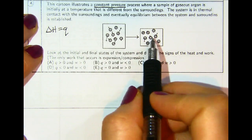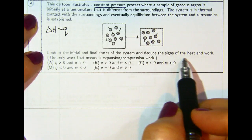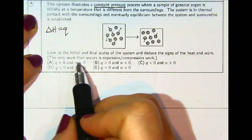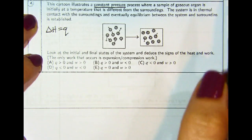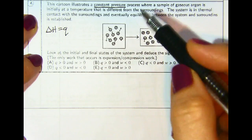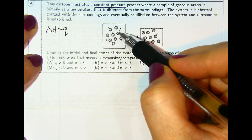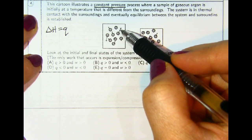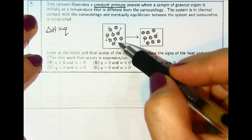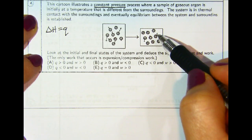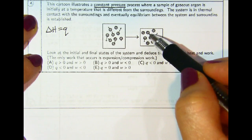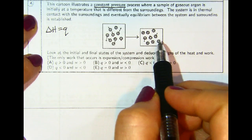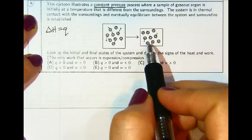Look at the initial and final states of the system and deduce the signs of work and heat. The only work that occurs is expansion and compression. You can look at the magnitude of the arrows coming off the particles — that would indicate a large amount of energy, so heat. But in the final stage you can see the magnitude of the arrows have gotten quite a bit smaller.